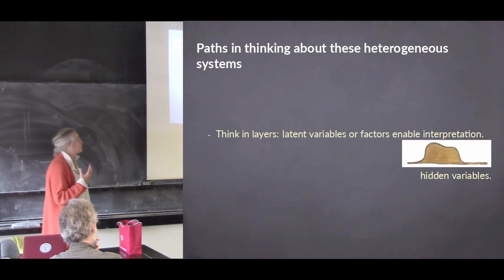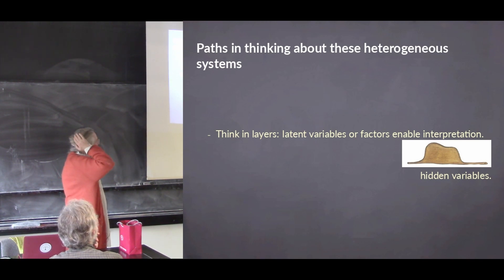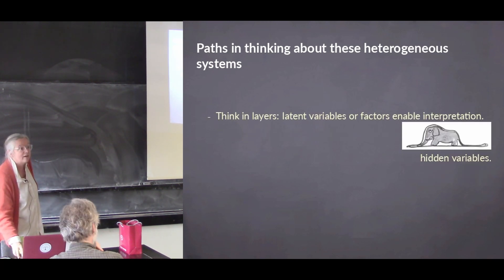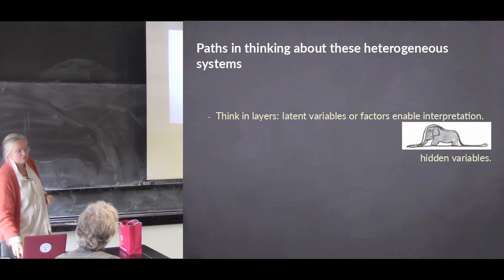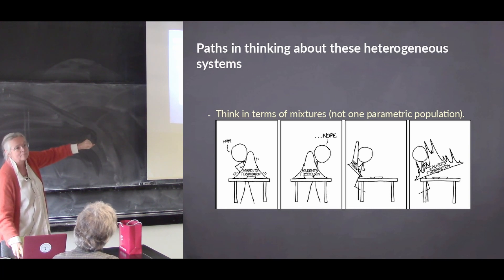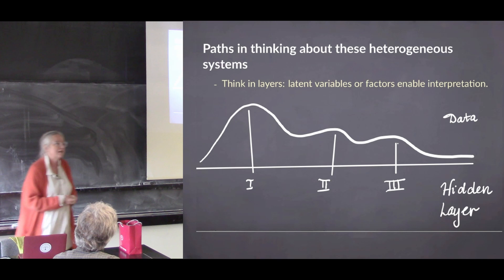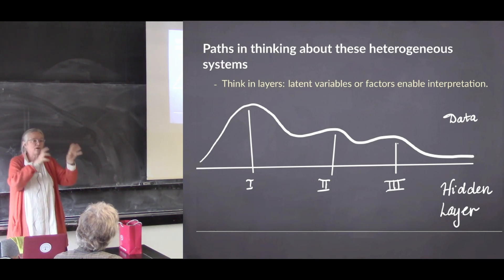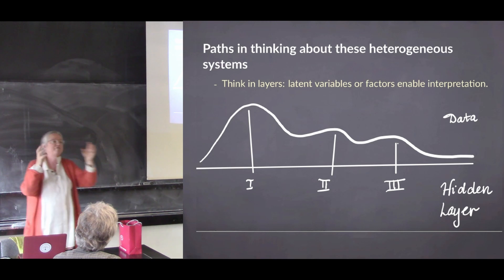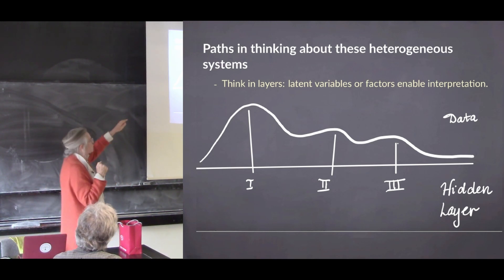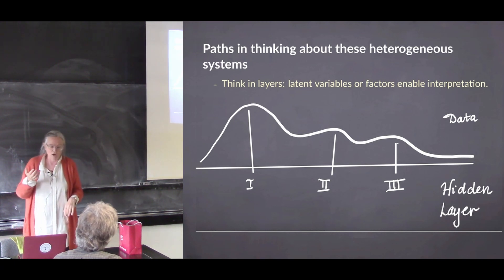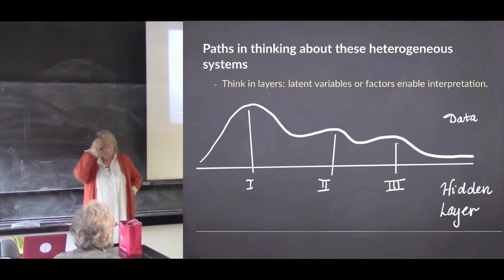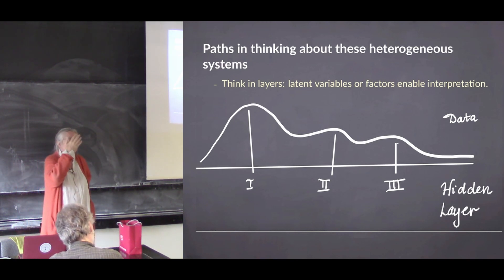I'll talk about positive thinking about heterogeneous systems. Mostly you have a bimodal distribution because there's a hidden variable, and a lot of what I'll talk about is trying to find those hidden variables. If you have a trimodal distribution, there's a hidden categorical variable — a factor — which you haven't measured but which is causing this mixture to occur. You have to think in layers, especially because there's a very popular series of methods, particularly in Canada.